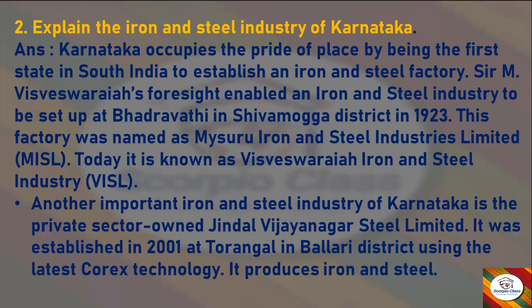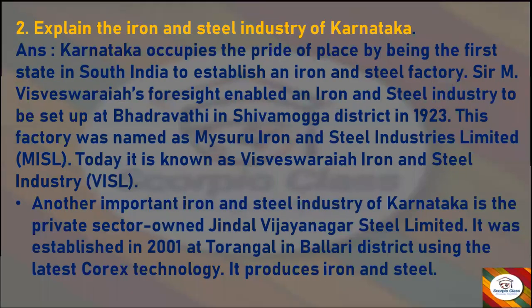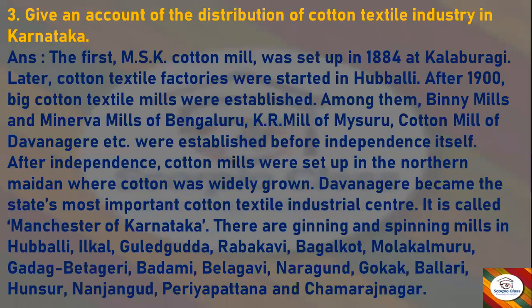It produces iron and steel. These are the iron and steel industries of Karnataka. Now let's move to the next question: Give an account of the distribution of cotton textile industry in Karnataka.